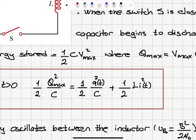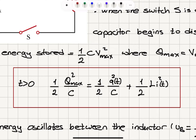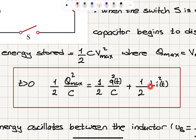Since I neglected all resistances and energy losses, I have energy conservation for T greater than zero. The total energy stored in the electric field of the capacitor, one-half Qmax squared over C, equals one-half Q squared over C — the charge at time T — plus one-half L·i squared, the inductance times the current squared. This is the energy in the electric field plus the energy in the magnetic field.